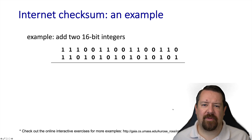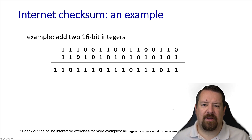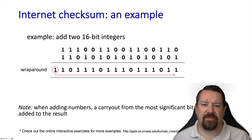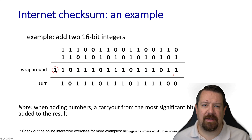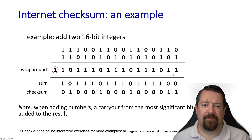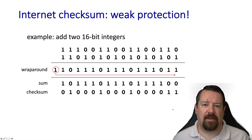Here's an example of computing a one's complement checksum, starting with performing standard binary arithmetic of two integers. Note that the sum of these two integers is 17 bits, but we only have a 16-bit checksum field. So we take the carry out and wrap it around back to the low-order bits of the sum. Once we've added that and performed the necessary carries, we now have our 16-bit sum. The checksum is the inverse of this sum, meaning all the bits are flipped, and that's the value that would be stored in the header.